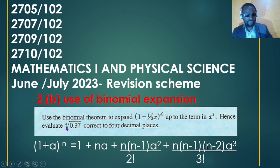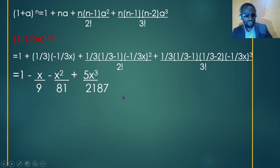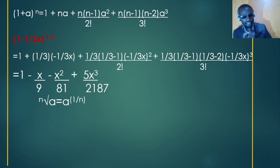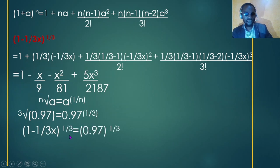The second part says: hence evaluate the cube root of 0.97 correct to four decimal places. From laws of indices, the cube root of 0.97 can also be written as 0.97 raised to the power 1/3, since the nth root of a number equals that number raised to 1/n. So we equate (1 − x/3)^(1/3) = 0.97^(1/3).